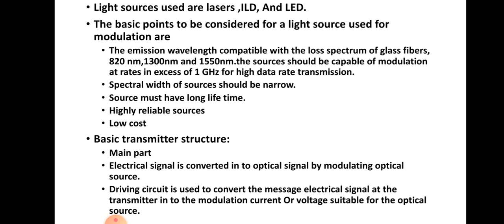We will discuss about the light source. The light sources used are lasers, injection laser diodes (ILDs), and LEDs. LEDs are most commonly used because they have very good features compared to other types. The basic points to be considered for a light source used for modulation are: the emission wavelength of the optical source should match the low-loss spectrum of glass fibers, which is 820 nanometers, 1300 nanometers, and 1550 nanometers — these are the three optical windows of operation.